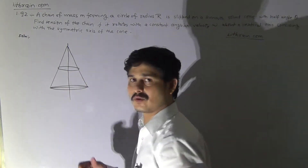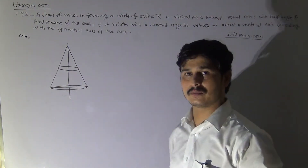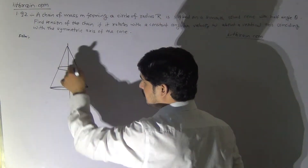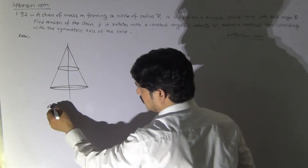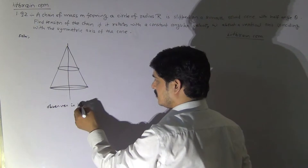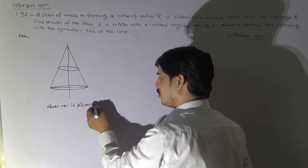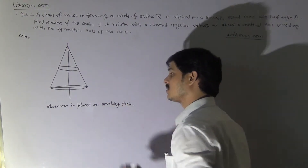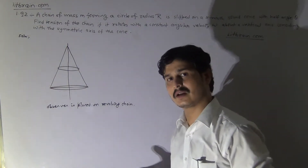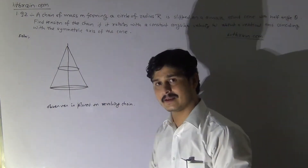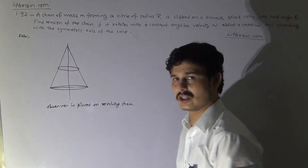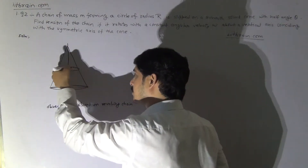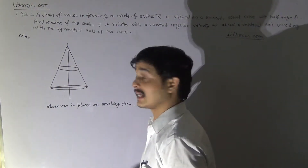If omega is the angular speed at which the chain revolves, it will experience a centrifugal force when viewed from the rotating frame — that is, as observed by an observer placed on the revolving chain. According to that observer's point of view, there will be a centrifugal force on the chain at every point.